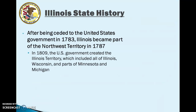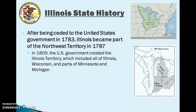At the end of the Revolutionary War, with the United States taking all of the land in North America from Great Britain in 1783, Illinois would become part of the Northwest Territory in 1787. This was a large span of territory that covered much of the Great Lakes region — Wisconsin, Michigan, Indiana, Ohio, and Illinois.